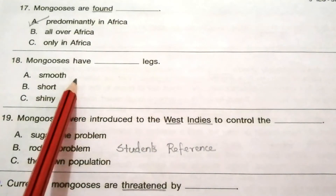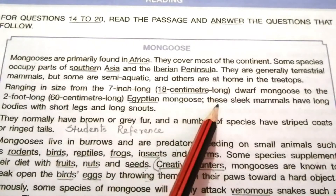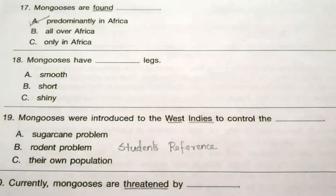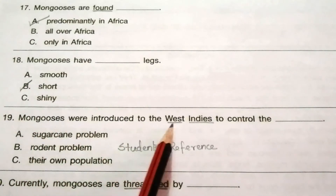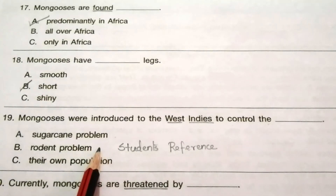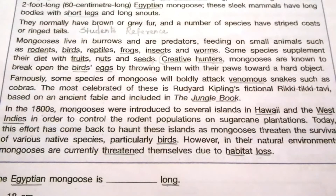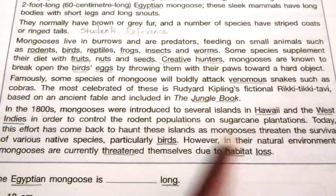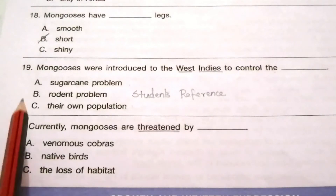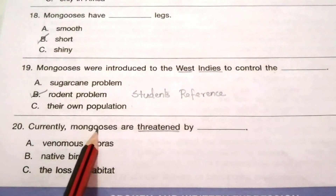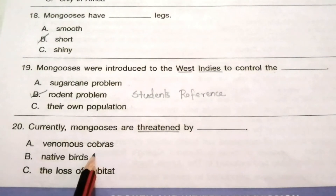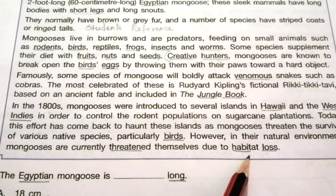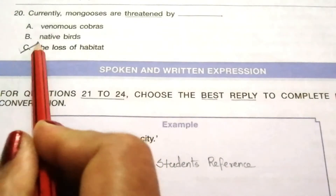Question 18: Mongooses have ___ legs — A) smooth, B) short, C) shiny. The passage says 'long bodies with short legs and long snouts.' So the answer is B — short. Question 19: Mongooses were introduced to the West Indies to control the — A) sugarcane problem, B) rodent problem, C) their own population. The passage says 'to control the rodent populations on sugarcane plantations.' So the answer is B — rodent problem. Question 20: Currently, mongooses are threatened by — A) venomous cobras, B) native birds, C) the loss of habitat. The passage says 'threatened themselves due to habitat loss.' So the answer is C — the loss of habitat.